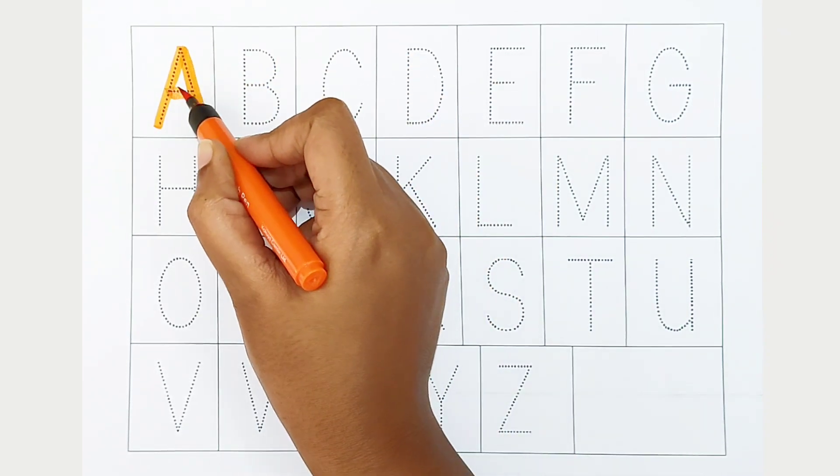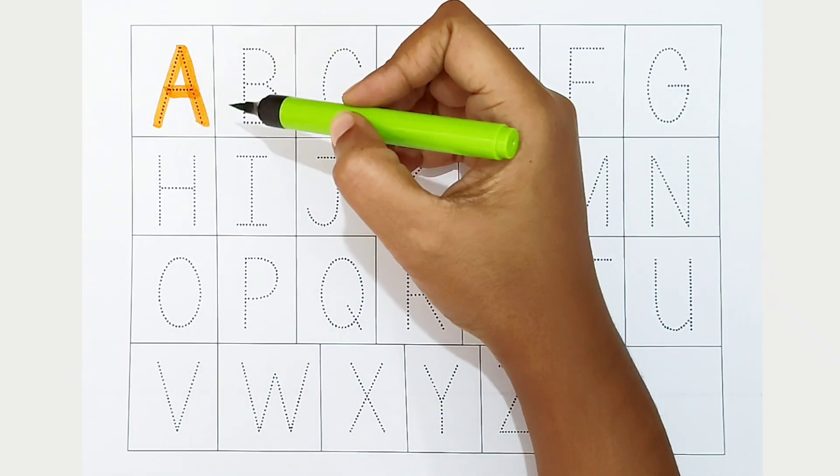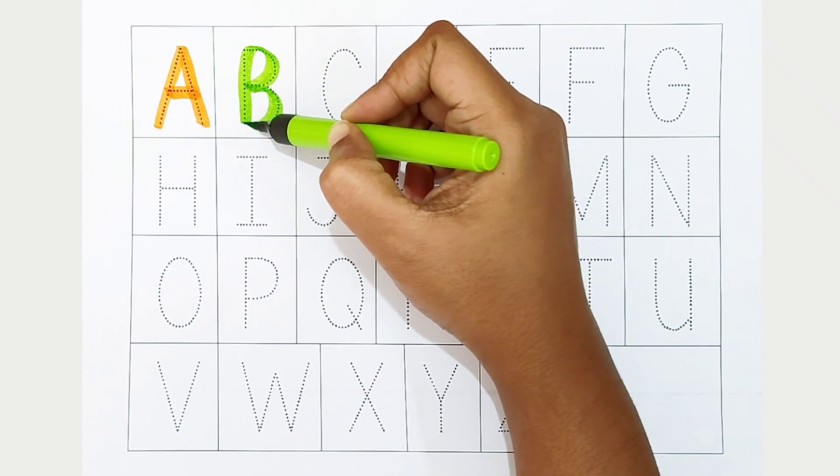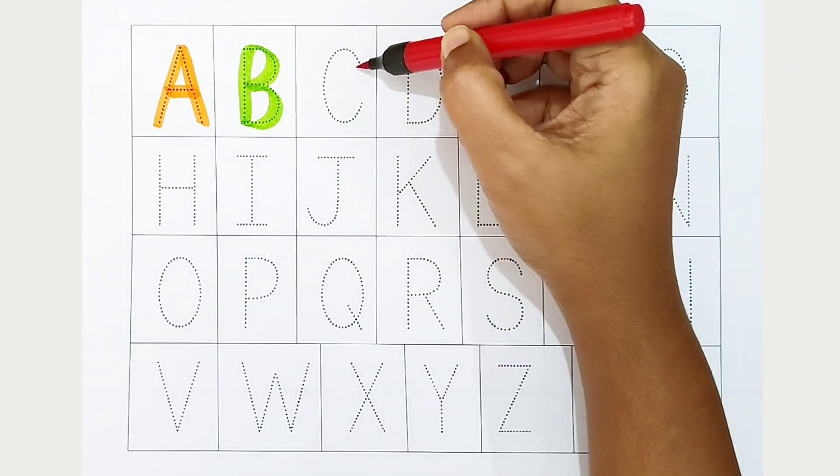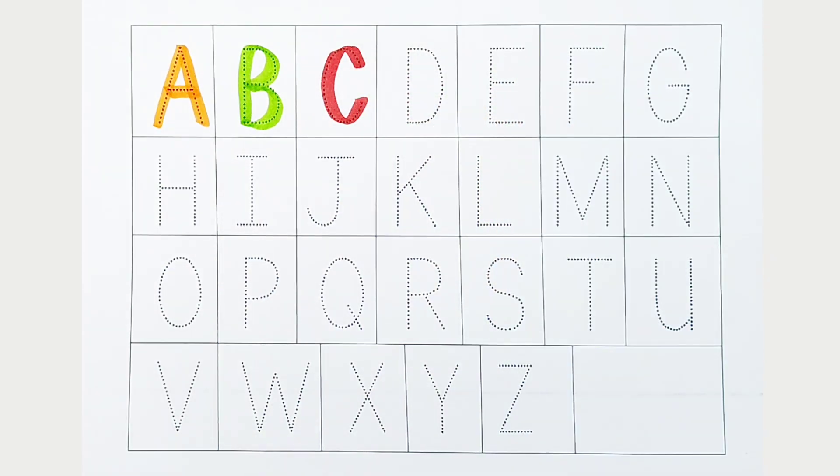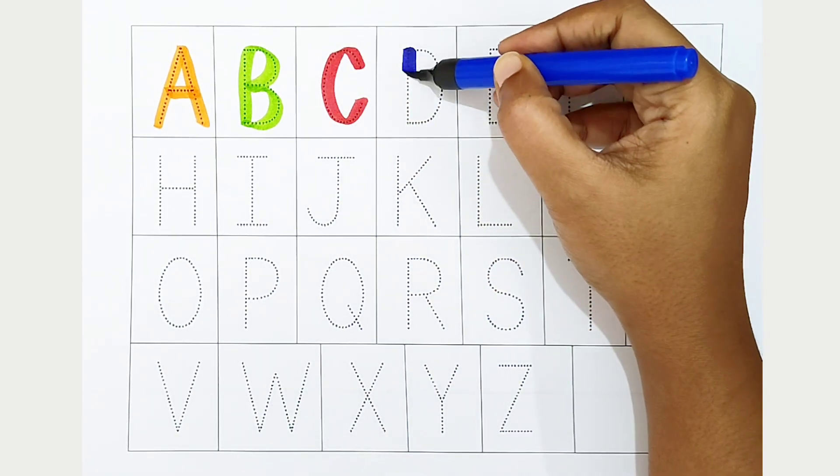for aeroplane. B, light green color. B is for bat. C, red color. C is for caterpillar. D, dark blue